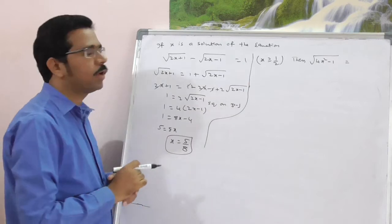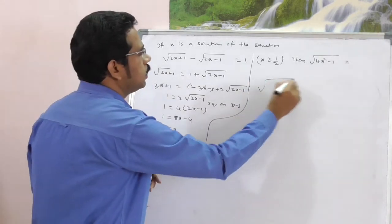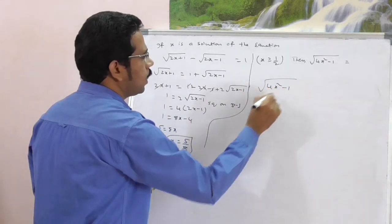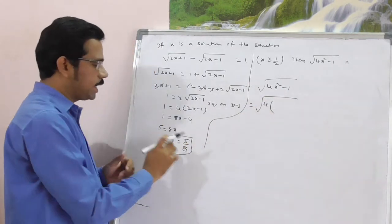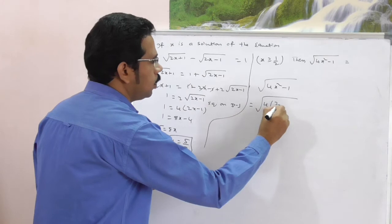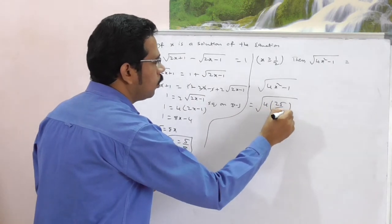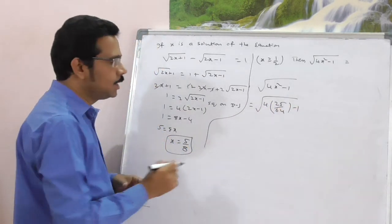then simply what is square root of 4x square minus 1? Here, square root of 4x square minus 1 is equal to the square root of 4 of x is 5 by 8. Simply substitute 25 by 64 minus 1.